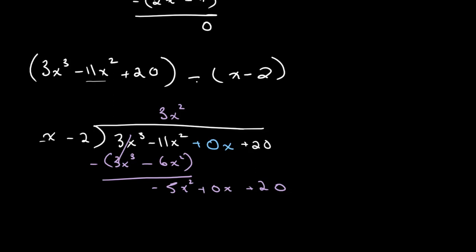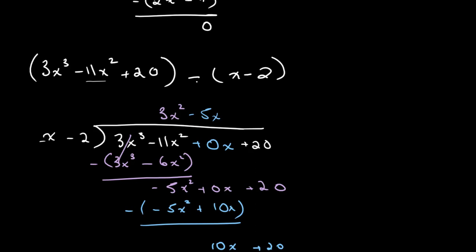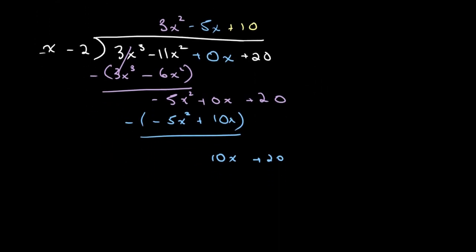We divide minus 5x squared by x, which gives us minus 5x. We multiply minus 5x by x minus 2 to get minus 5x squared plus 10x, then subtract, giving us minus 10x plus 20. Then 10x divided by x is 10, so we get plus 10 — actually minus 10 — in our answer. We multiply minus 10 by x minus 2 to get minus 10x plus 20, subtract, and we get a remainder of 0.